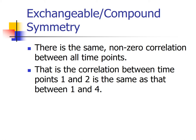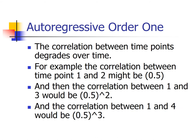The next level of complexity is compound symmetry — also called exchangeable — which says there is the same non-zero correlation between all time points. The correlation between time points 1 and 2 is the same as between time points 1 and 4, or 2 and 3. Maybe all have a correlation of 0.5 or negative 0.3. So here we're only fitting one parameter — a single correlation that we're assuming fits all possible pairwise correlations, which may or may not be true.